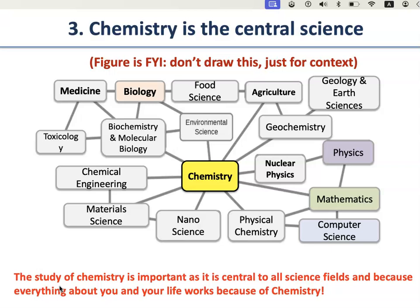Anything about you, your life, and everything around you is made up of atoms. To understand how molecules and big things made out of atoms work, you need to understand chemistry. For example, if you go to the doctor, you are dealing with medicine, and medicine is created with biochemistry and molecular biology. To understand that, you have to understand chemistry. You can look at all of these and see how everything is connected to chemistry.